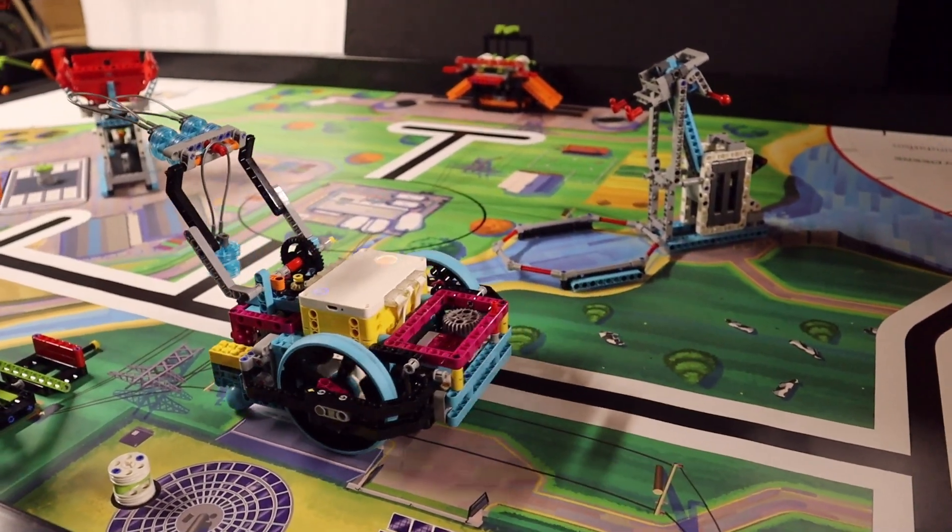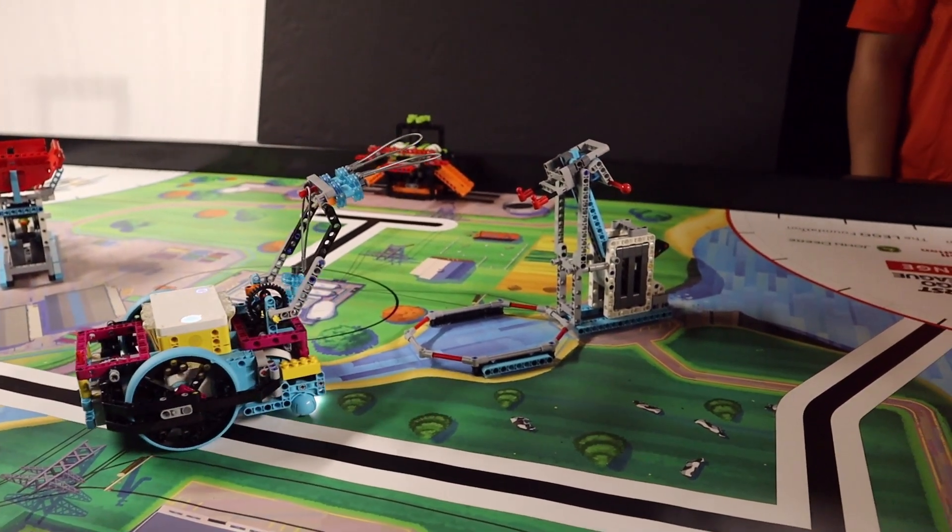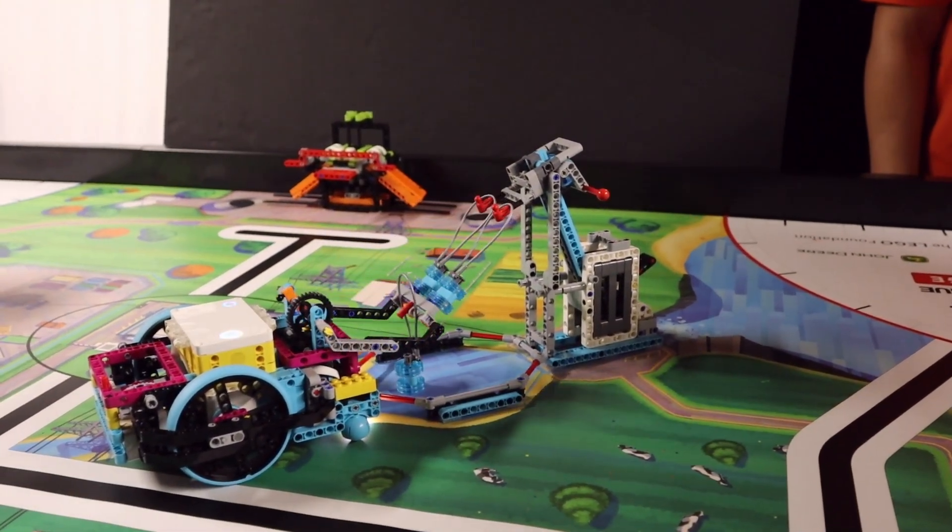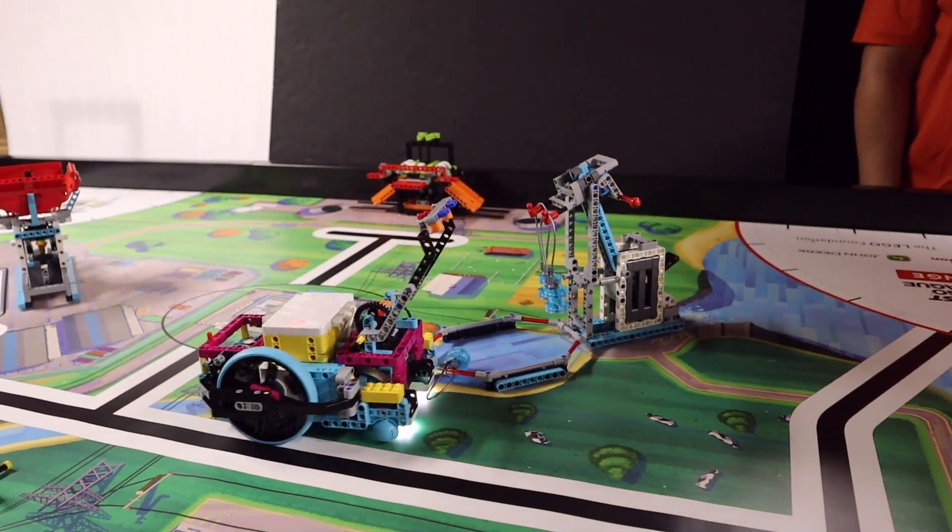Then the robot lowers the attachment, the hinge flips over, dropping the water units, but the loops catch on the red hooks of the mission model. The third water unit slides off its hook and onto the mat inside the water reservoir.